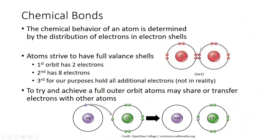It is the electrons in the outer shell that give an atom its chemical behavior — how it's going to interact and bond with other atoms. An atom will form chemical bonds depending on how many electrons it has in its outer shell. Atoms always want a full valence shell.